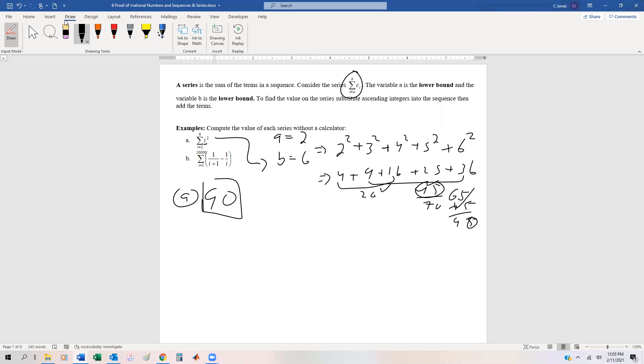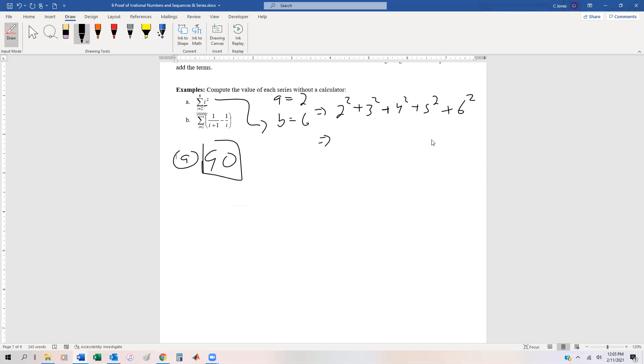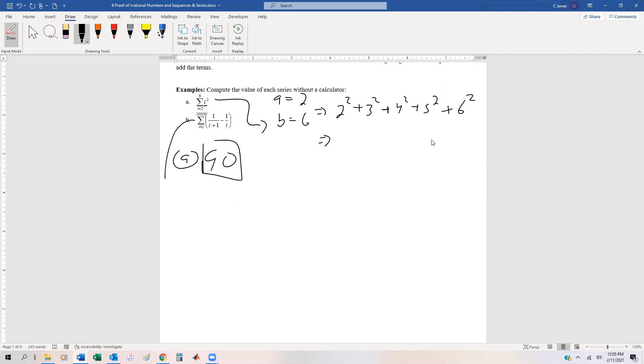Now, something that might not be as easy is if we have something that appears to be extremely lengthy. We have this one where we have i equals 1 to 10,000, and it's one over i plus one minus one over i. What we can do is start writing out the terms of the series and then maybe something good will happen.